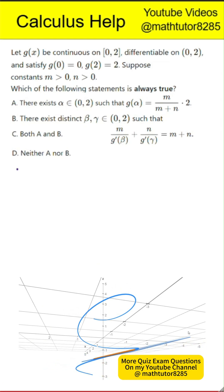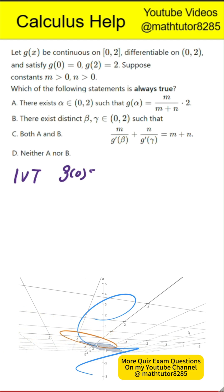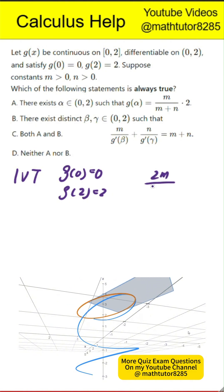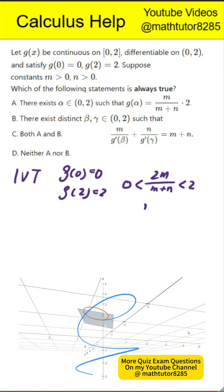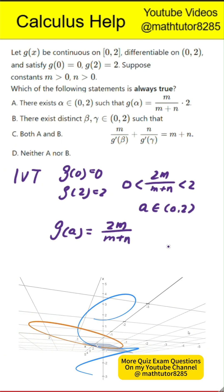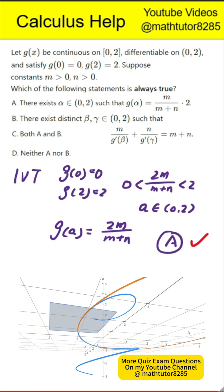First step, we apply the intermediate value theorem. Since g of 0 equals 0 and g of 2 equals 2, and the target value 2m divided by m plus n lies strictly between 0 and 2, the intermediate value theorem guarantees that there exists some alpha between 0 and 2 with g of alpha equal to 2m divided by m plus n. Therefore, statement A is true.